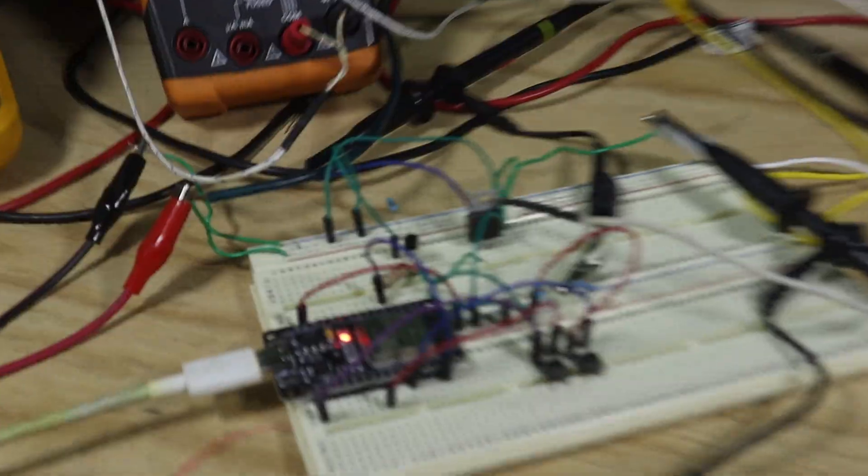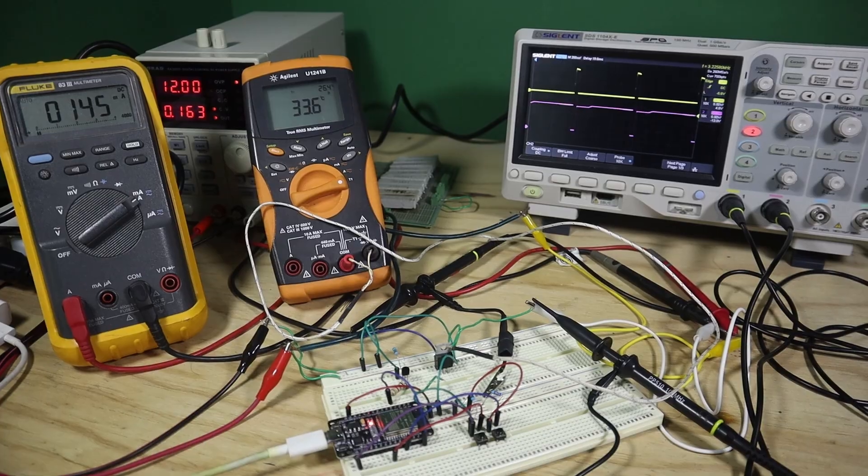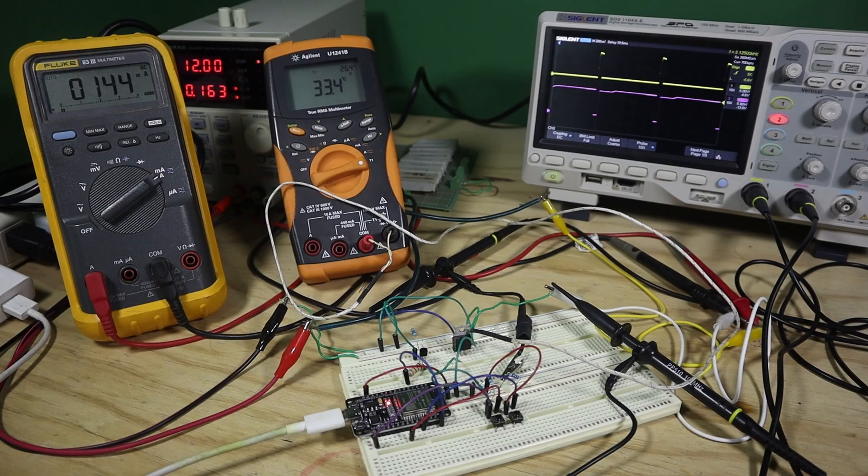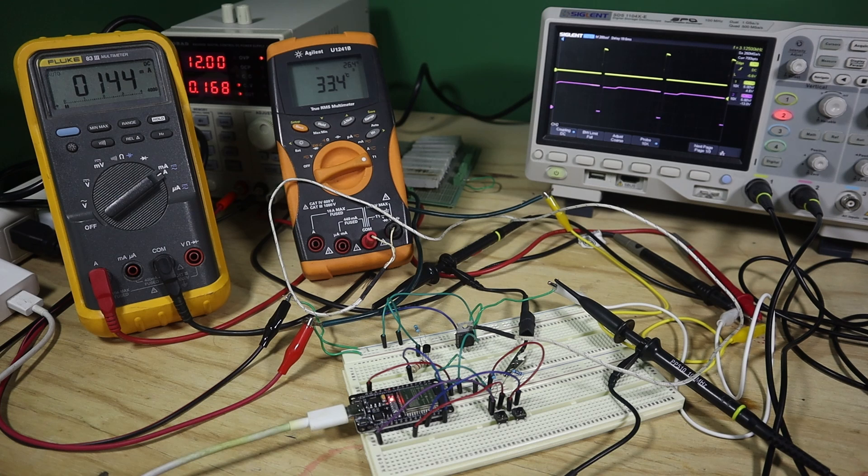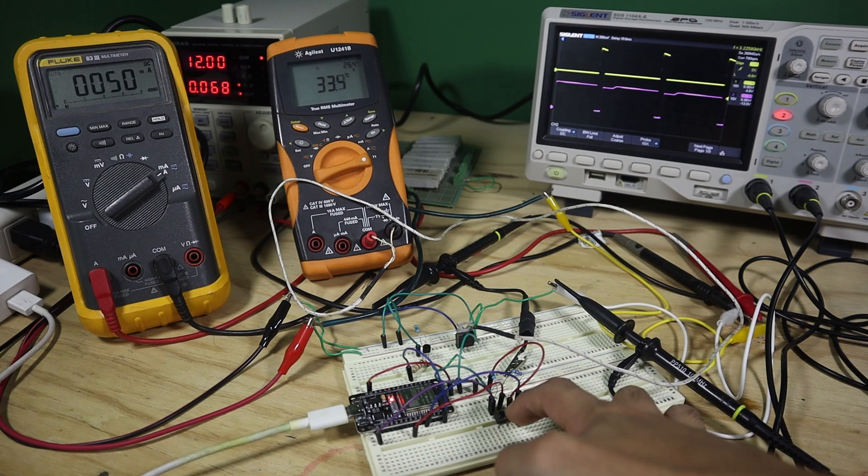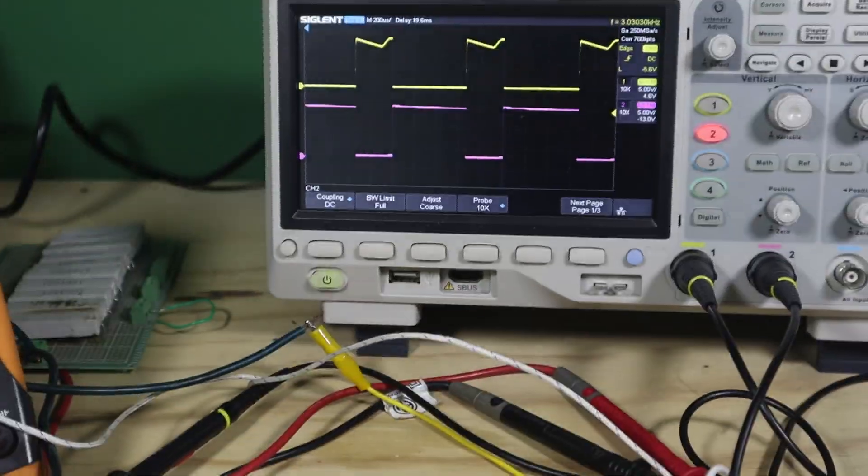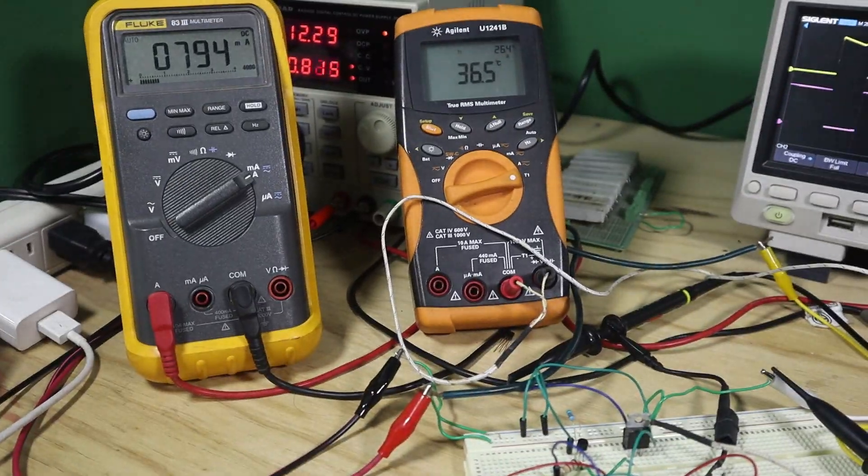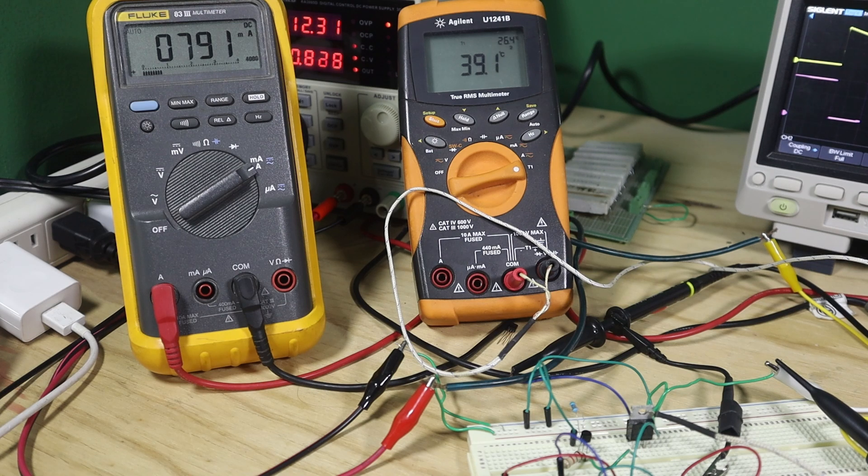So now we can see the setup we have. We have the NPN transistor controlling the gate of the MOSFET transistor and we can see the output in the oscilloscope. We have an inverted logic. Now we have our dissipation test. We have our first multimeter checking our current, our second multimeter checking the temperature of the MOSFET, and then we have the output signal in our oscilloscope. We can see that with a small current we have a very small increase in temperature, but we are going to increase the current controlling the PWM duty cycle. We have to remember that we are not using a heatsink.